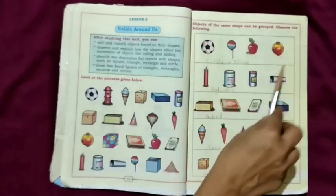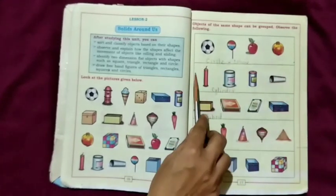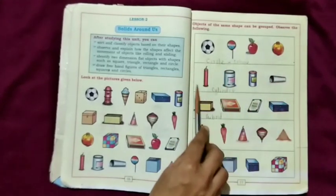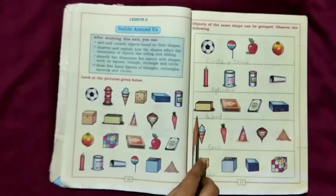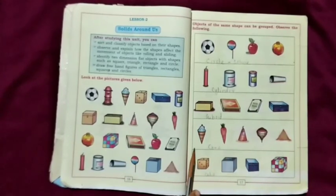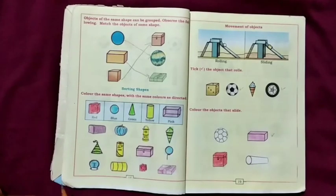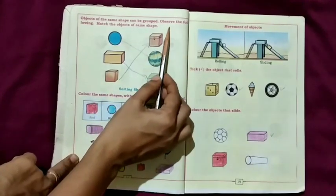These are the group of sphere. These are the group of cylindrical objects. These are the group of cuboid objects. These are the group of cone objects. Objects of the same shape can be grouped. Observe the following.